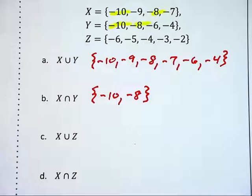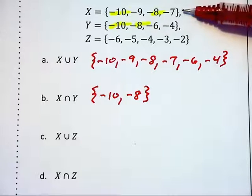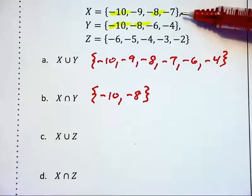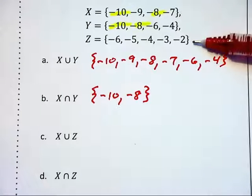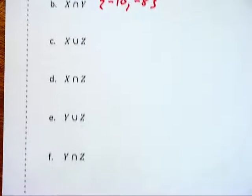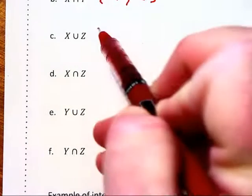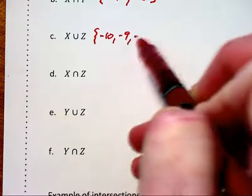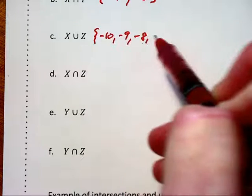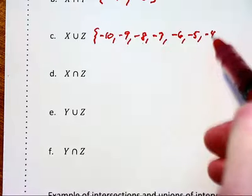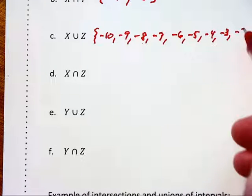In this third part, we wish to combine together sets X and Z, and we see that there is no duplication between these two sets. So their union will be basically the combination of the two sets — and it's a larger set: negative ten, negative nine, negative eight, negative seven, negative six, negative five, negative four, negative three, and negative two.